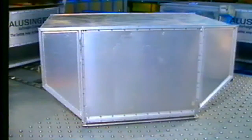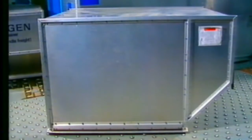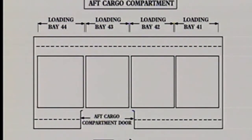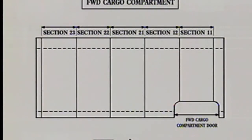The cargo compartments can be loaded with different types of containers: full-size container, half-size container, or pallet. The forward compartment of the A320 can receive three containers or pallets in the aft compartment. For the A321, the forward and aft compartments can receive five containers or pallets.